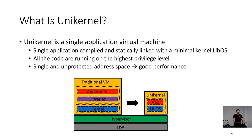What is a unikernel? A unikernel is a single application virtual machine. The application is compiled and statically linked with a minimum kernel-level OS. All the application and kernel code are running on the highest privilege level, and they share a single and unprotected address space, which leads to good performance.